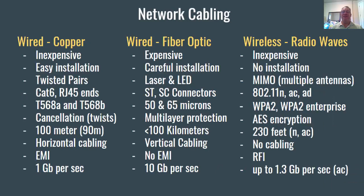Let's look at physical layer stuff — layer one, like the media or network cabling. You need to know the basics about cabling. You've got copper cable, fiber optic cables, and wireless or radio waves. With copper cable, it's usually called UTP — unshielded twisted pair cable. It's inexpensive and easy to install. It uses twisted pairs — there are four pairs of wires in the cable and they're twisted together. Today's standard uses cat six cables with RJ45 ends. The previous standard was cat five and cat five E, and cat six is essentially an enhanced version of cat five E.